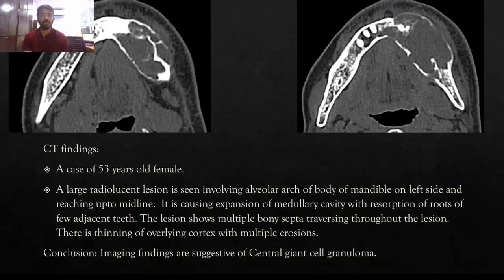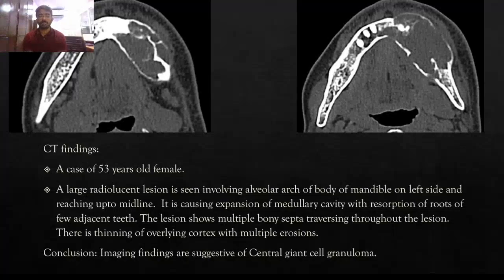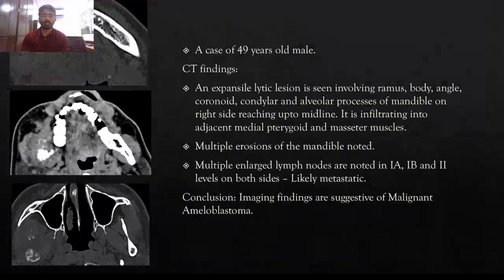Case 5: a 53-year-old female. CT findings show a large lesion in the alveolar arch of the body of the mandible, predominantly on the left side reaching up to midline. There is expansion of the mandibular cavity and resorption of the root of adjacent teeth. The lesion forms multiple bony septa throughout the region, with thinning of cortex and erosion, suggestive of central giant cell granuloma.